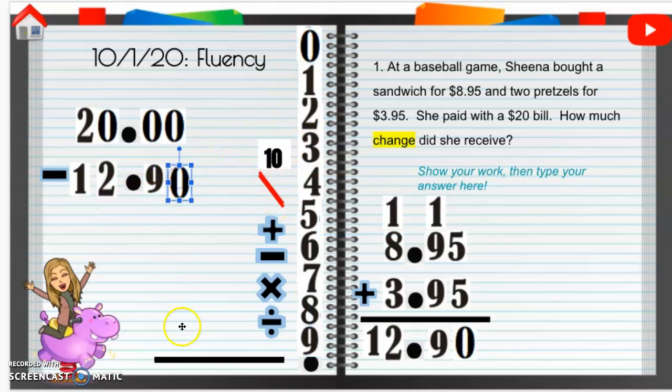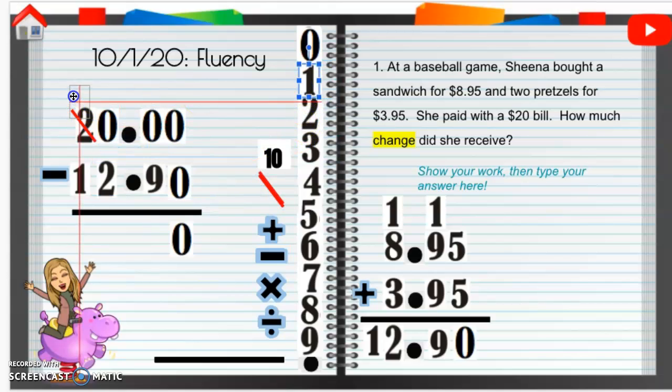Alrighty. So now we're going to subtract. What is 0 minus 0? Yeah, that's just going to be 0. How about 0 minus 9? We can't do that, so what do we need to do? We need to borrow from this 0. We can't do that, so we need to borrow from this 2 to make that 2 a 1.